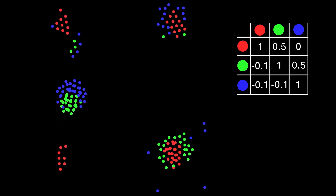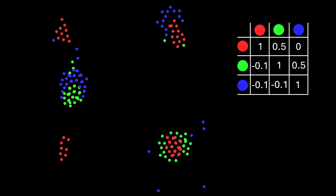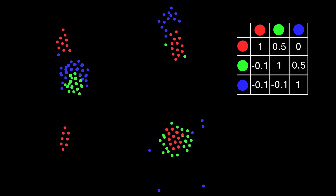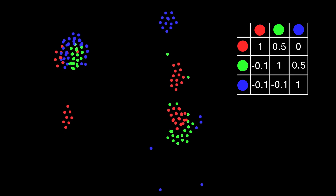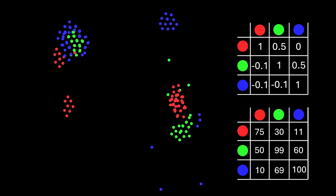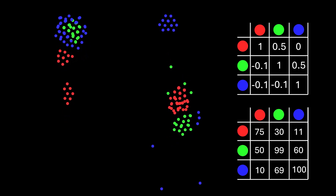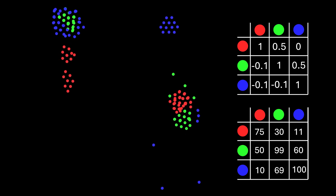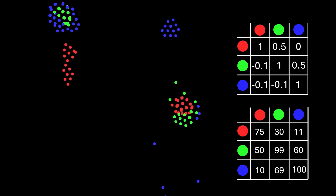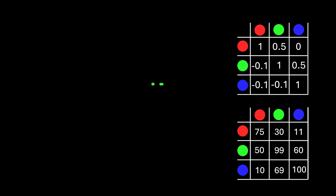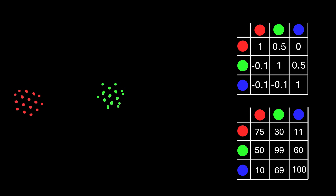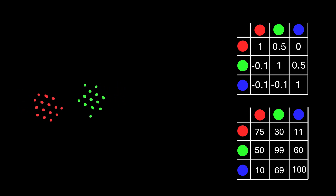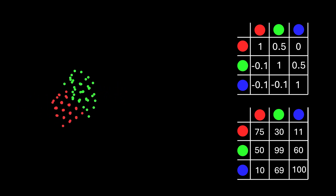Each particle is checking every other particle in their environment which comes within range to work out their next position. Rather than just setting a fixed distance like 100 pixels, I added a second control matrix so I could vary the distances at which different particle pairs can interact. For example, greens might interact with reds at 50 pixels, but reds won't interact with greens until they are 20 pixels away, just to add some additional complexity.